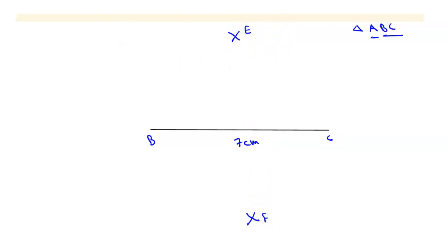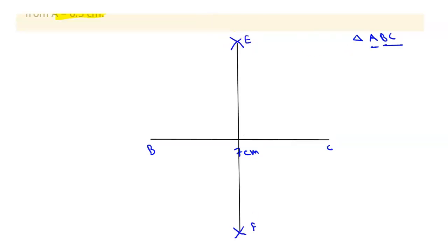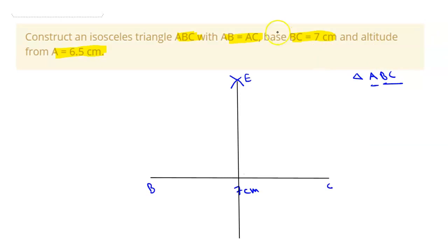And according to the question, we have given altitude of 6.5cm. So let's suppose this is O. So from point O, cut an arc of 6.5cm. So this is point A. Now join the points AB and AC.